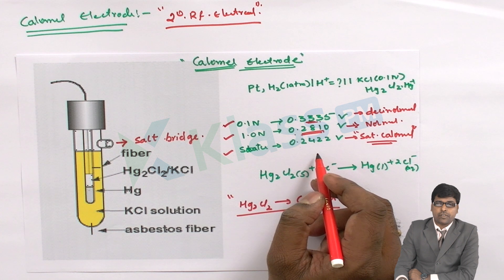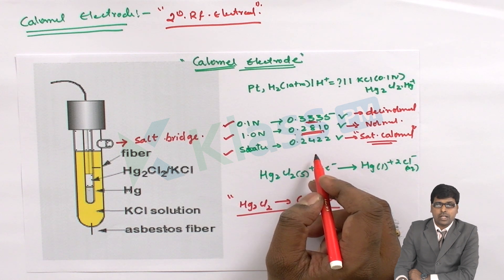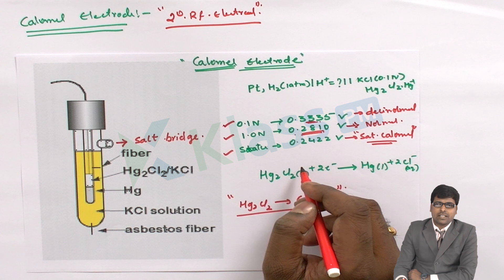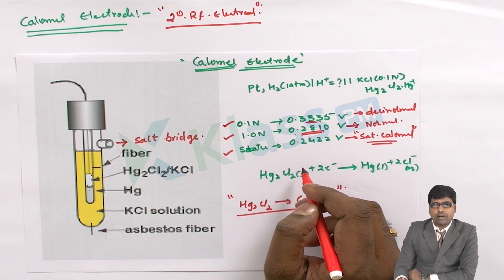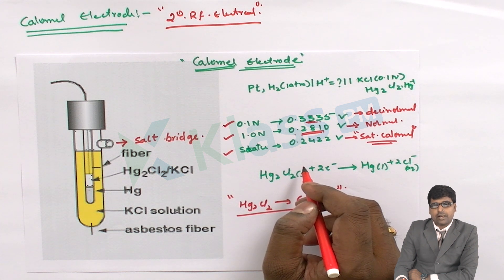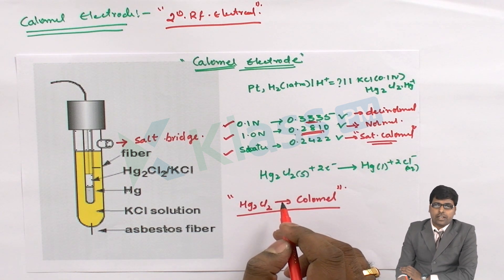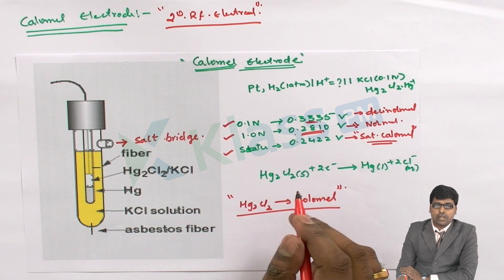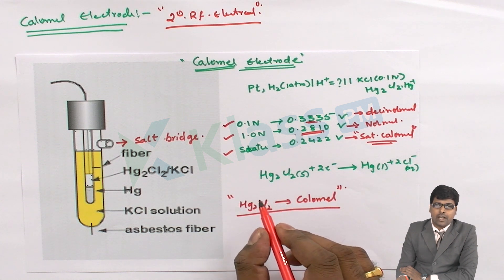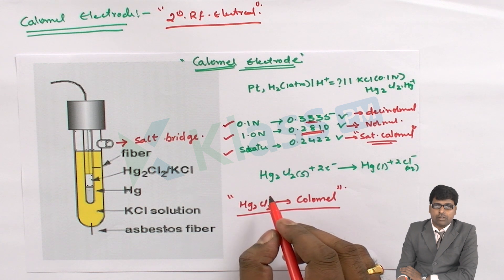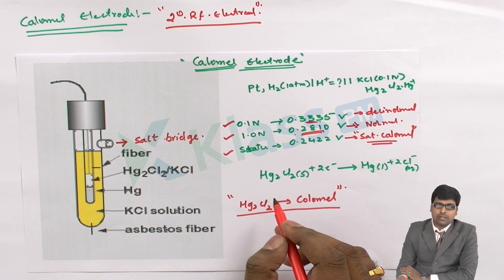The first question is: why is the Calomel electrode used instead of the standard hydrogen electrode? Because the standard hydrogen electrode has certain demerits — it is not portable, requires a lot of space, needs specific monitoring equipment, and is costly to maintain. To overcome all these drawbacks, the Calomel electrode is introduced.